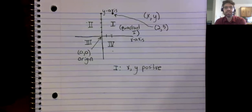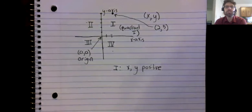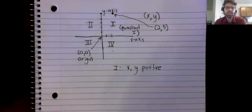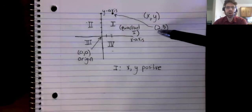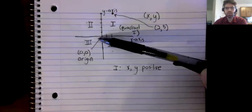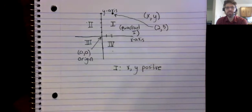I think that's probably enough for now. We'll maybe talk a little more about graphing in a separate video. In this video, we've defined the Cartesian plane, we've seen how data points are plotted on the Cartesian plane, we've defined the origin, and we've defined the quadrants.